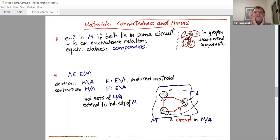So we mentioned two things: connectedness and minors. What is connectedness? We say that E and F in M are equivalent if they lie in some common circuit. And it turns out to be an equivalence relation. It's not completely obvious, but it is. And the equivalence classes are called components. So if we look at what it means in graphs, it corresponds to the connected components of graphs. The elements are the edges, and it corresponds to connected components. This is the connectivity, connectedness.